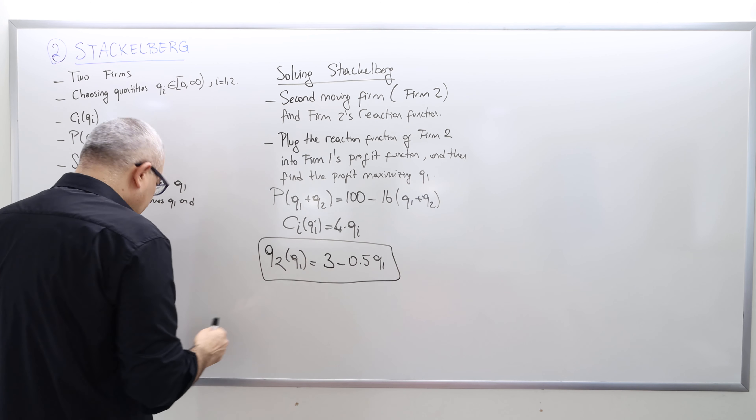We can calculate the optimal price using the demand curve: P = 100 − 16 × (total quantity = Q1 + Q2 = 3 + 1.5 = 4.5 = 9/2). So P = 100 − 16 × (9/2) = 100 − 72 = 28. The price in Cournot was about 36, so the price is lower in Stackelberg.